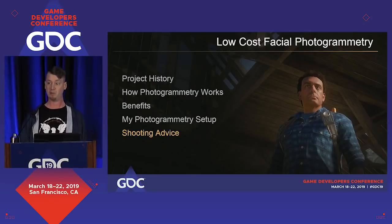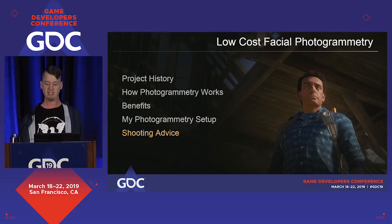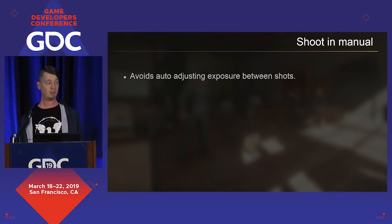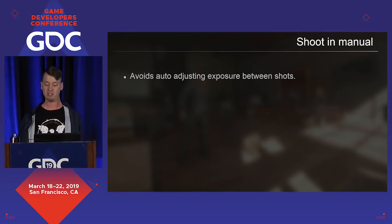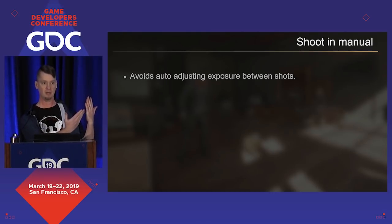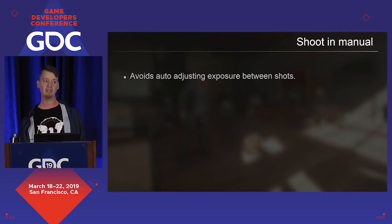Now we get to the practical portion of this talk — I'd like to share some general advice to help you get the best possible scans you can. First of all, you always want to shoot in manual. Exposure adjustments from one shot to another will make it much harder for the software to find matches and will cause a lot of problems with texture blending. When you have two different exposures trying to blend together, you're going to get very patchy, uneven textures.